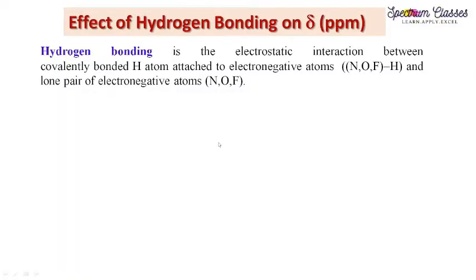Hello everyone, welcome to Spectrum Classes. This is another NMR video, and in this video we are going to discuss the effect of hydrogen bonding on chemical shift value. The chemical shift value is represented in terms of delta ppm. PPM is the unit of chemical shift, and this unit signifies that the field is independent of the applied external magnetic field.